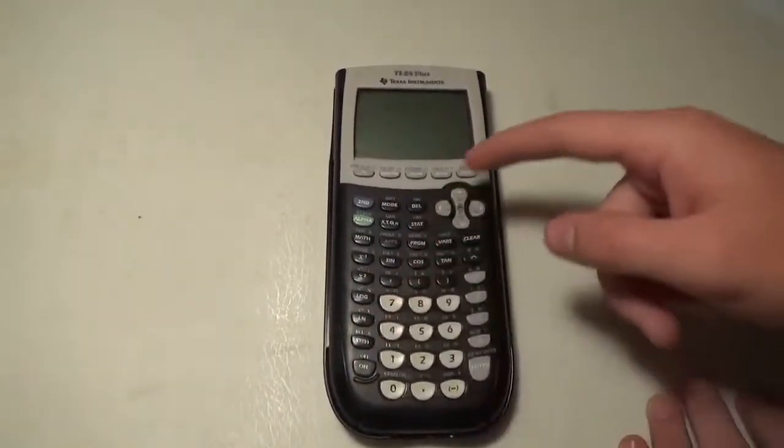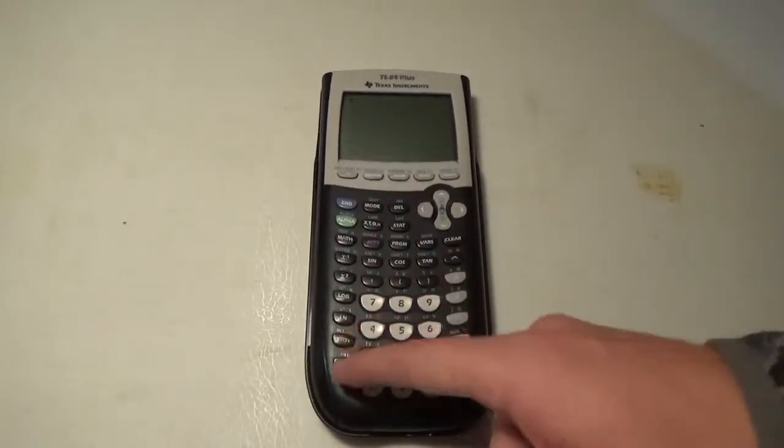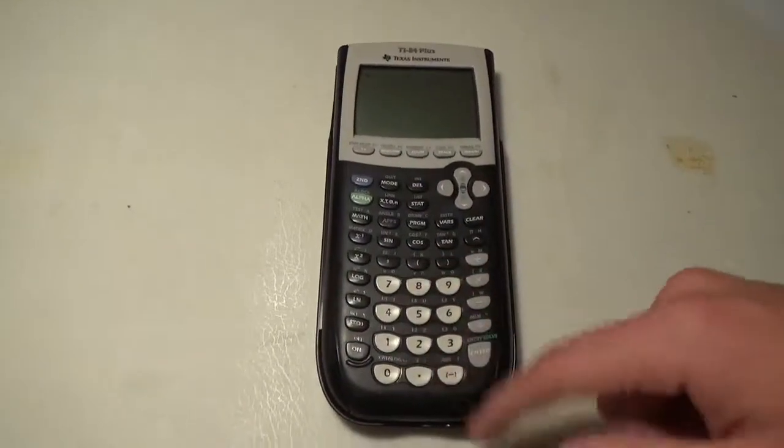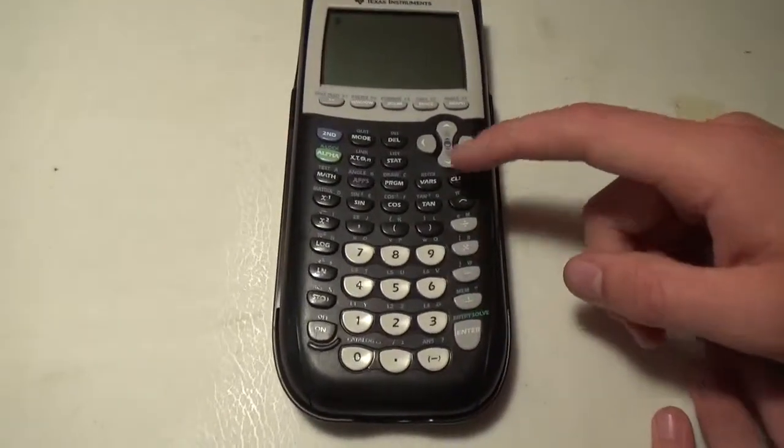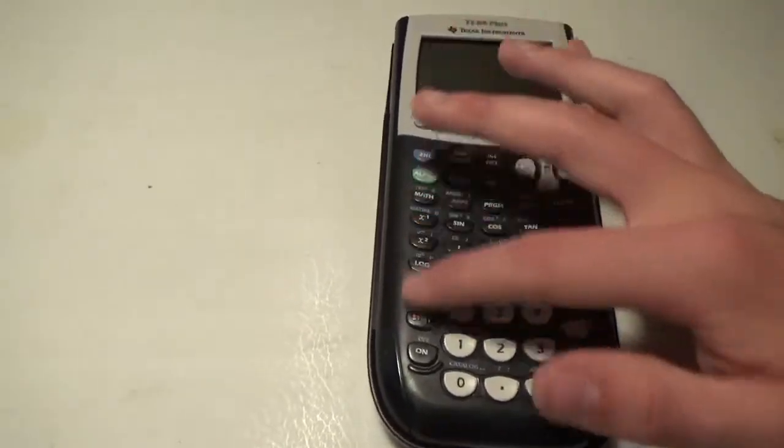This is a pretty well-known calculator. Hit the on button down here, second on is to turn it off. Here we have all the number pad, operations and enter down here, clear is right here, the d-pad is up here.